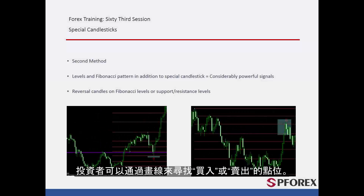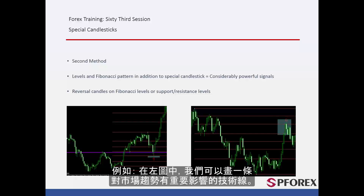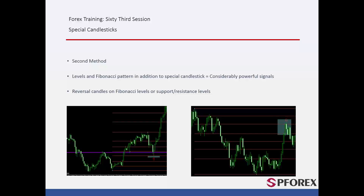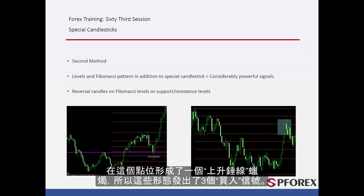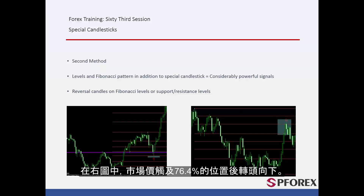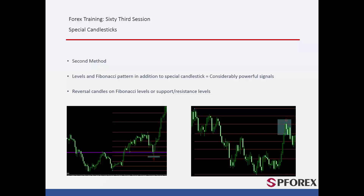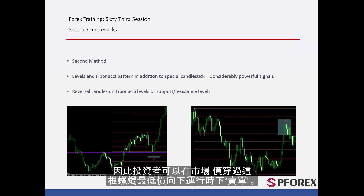Second method: A trader can detect buy or sell spots via levels. For example, on the left graph, a level can be drawn which has significant effects on market trend. A Fibonacci pattern can be inserted — price reversed its direction on level 61.8%. A bullish hammer has formed on this spot, so three buy signals can be derived from these patterns. On the right graph, market price returned to its downward direction after touching level 76.4%. A dark cloud has formed on this breakout point. Thus, a trader could place a sell order after market price has passed the low price of that candle towards the bottom.